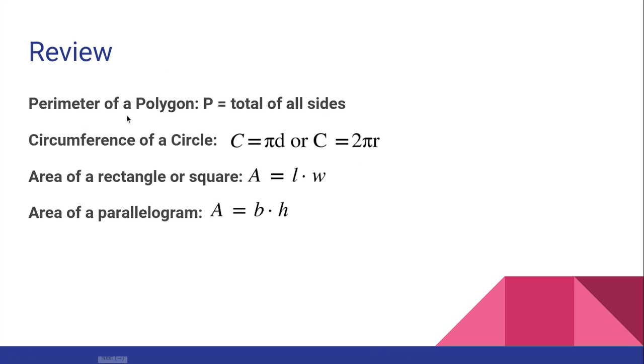The perimeter of any polygon, a square or a rectangle or a triangle or some irregular polygon, we just add up all the sides. The area of a rectangle or a square is length times width. And the area of a parallelogram is base times height. So you might be asked to do all of these things on your homework today, as well as find the area of a triangle, which is base times height divided by two.